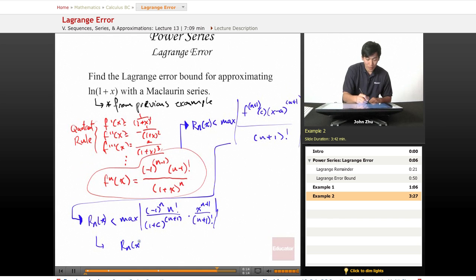Our error bound now is defined by the max value of (-1)^n times x^(n+1), all over (1+c)^(n+1) times (n+1).